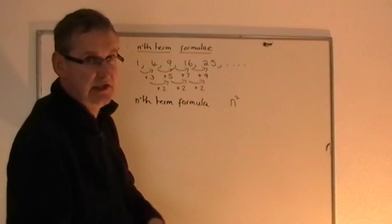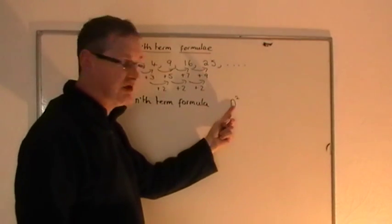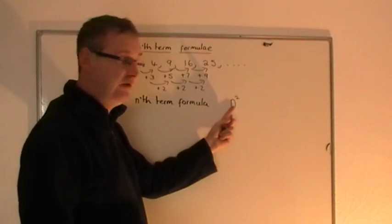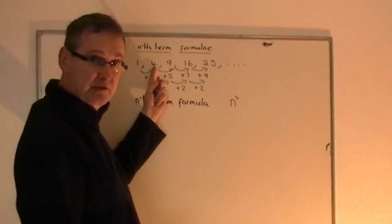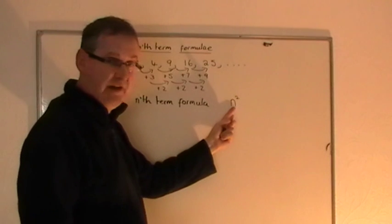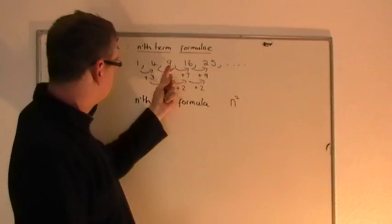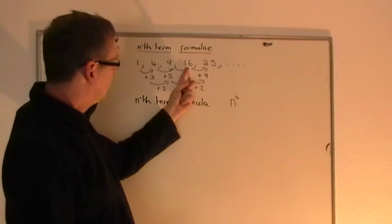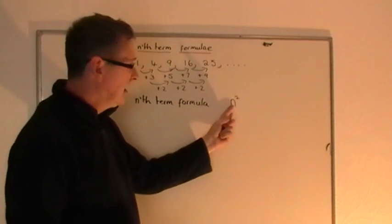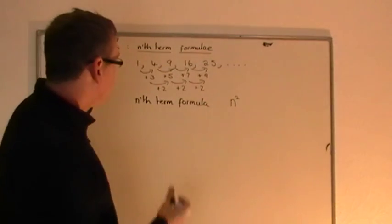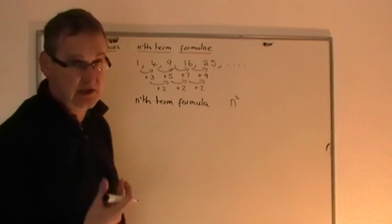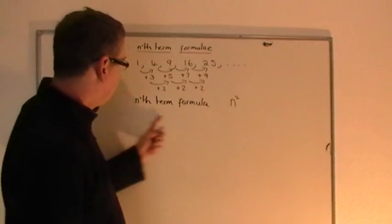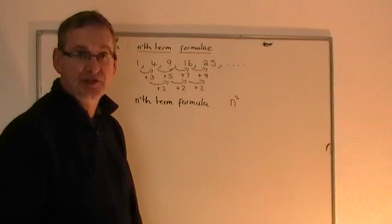If n is 3, 3 squared is 9 — yes it is. If n is 4, 4 squared is 16 — the fourth term is 16, yes. If n is 5, 5 squared is 25 — yes. So for this particular sequence, 1, 4, 9, 16, 25 can be represented by the formula n squared.